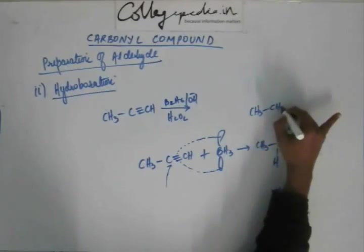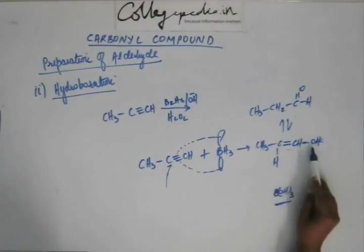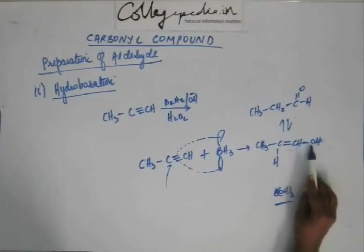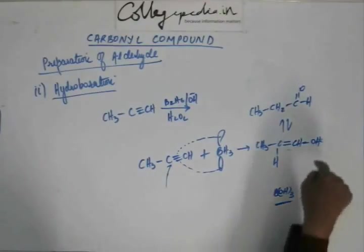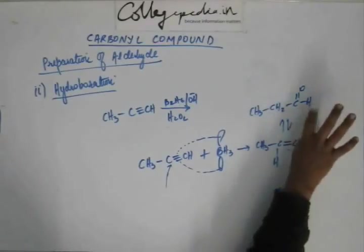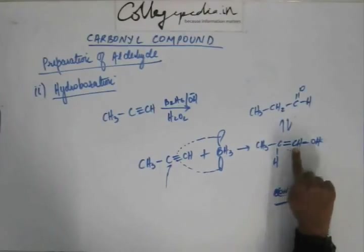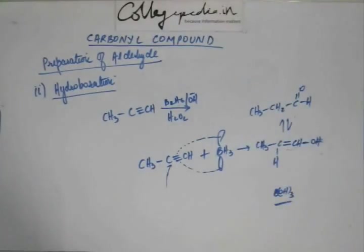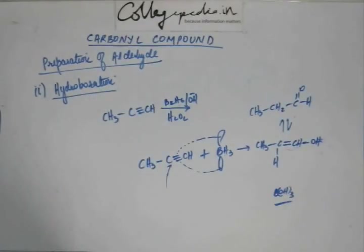The keto form looks like this: the carbon that had the OH continues to have the oxygen, so the carbon-oxygen bond remains in the same position. The terminal carbon makes a bond with oxygen in the keto form as well. Since it is a terminal carbon, there is no carbon on the other side, so that terminal carbon also has a hydrogen — and that is why this gives us an aldehyde. So if we have a terminal alkyne, hydroboration oxidation gives us an aldehyde as the product.